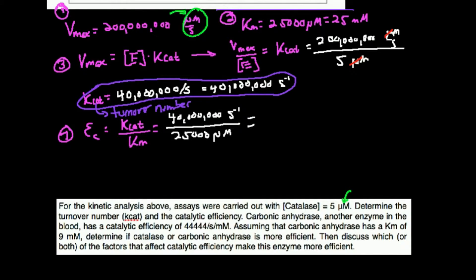So let's calculate: 40 million divided by 25,000. It turns out the catalytic efficiency of catalase is 1,600, and the units are inverse micromolar inverse second. Those are the units.